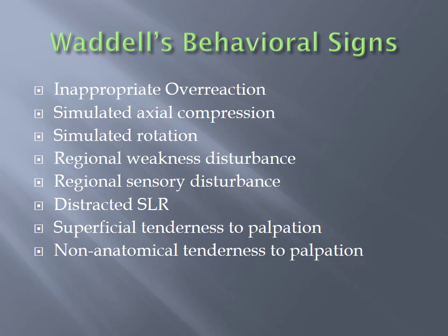Simulated rotation is similar — having a patient stand with their feet firmly planted and then rotating the entire body, essentially not rotating the spine, maybe initiating at the hips. If that person reports symptoms with this, they may be demonstrating an abnormal behavioral sign. Regional sensory disturbance is when a person doesn't display any specific dermatomal or myotomal pattern — for example, if the arm they're complaining of is completely numb and this doesn't correspond to specific nerve root problems.